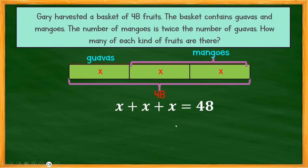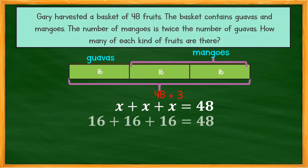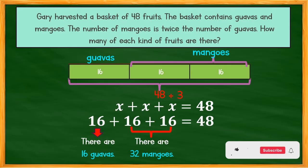Divide 48 by 3: X equals 16. So there are 16 guavas. Check: 16 plus 16 plus 16 equals 48. Therefore, there are 16 guavas and 32 mangoes in the basket.